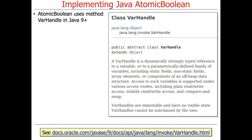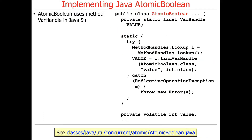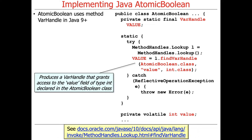By the way, AtomicLong is also implemented much the same way, but I already showed you the unsafe version of that. Here's what it looks like with AtomicBoolean — you can see the source code at these links. What's going on here is very similar to what we did with AtomicLong with the Unsafe class; we're just using VarHandles here.